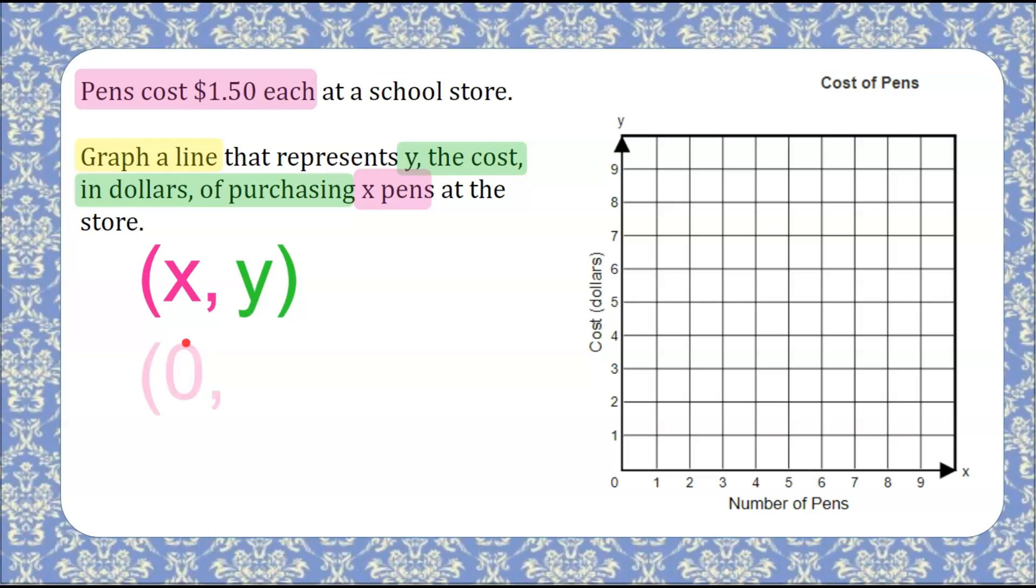Let's understand that if I buy zero pens, I'm spending $0 at the school store. Let's plot that point. 0-0 is our origin.